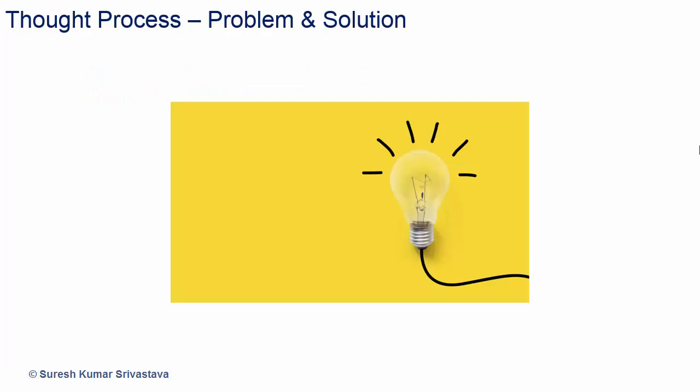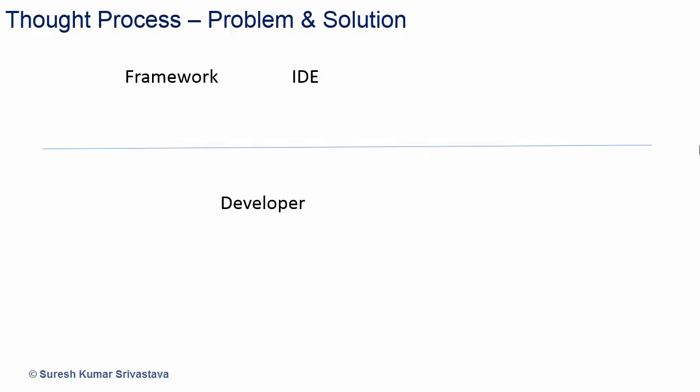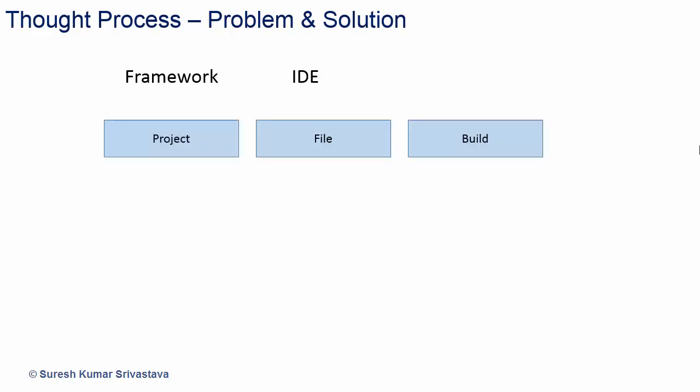Let's have a thought process for the problem and how we will come up with the solution. We would like to develop a framework for an IDE, and developers will use the framework to provide the development environment according to their organization's needs — for example, projects with special parts, language specific to a domain, changes in building a project or debugging, etc. So the framework will have project, file, build, etc. to have development environment features.